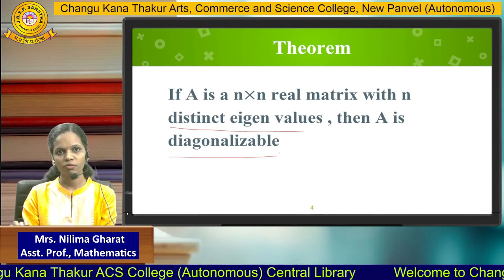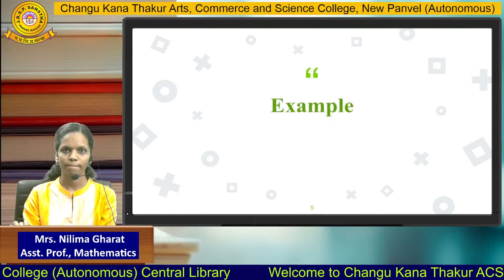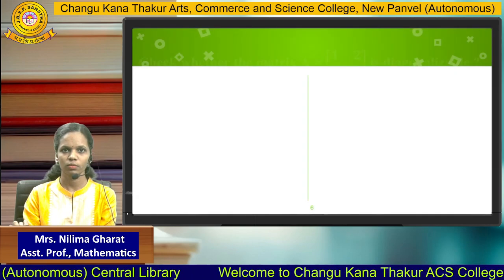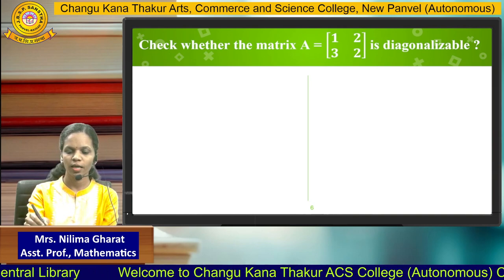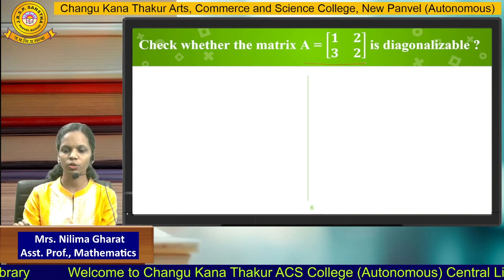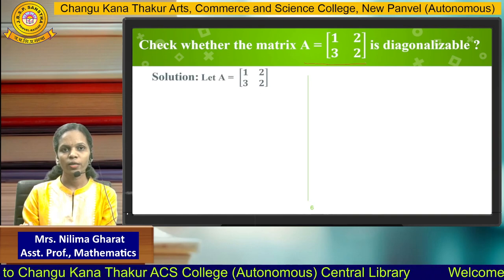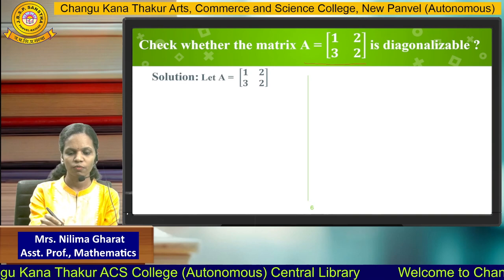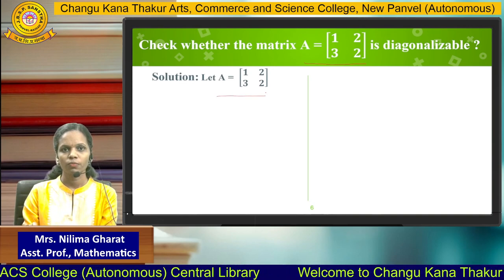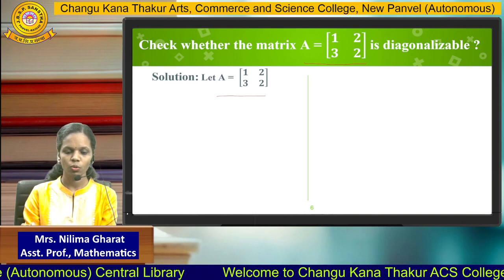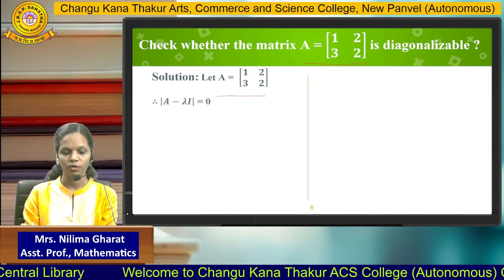By using this theorem we will solve one example. Check whether the matrix A equal to [[1,2],[3,2]] is Diagonalizable. The 2 by 2 matrix given to us is A equal to [[1,2],[3,2]]. We need to find out the eigenvalues, so by using the characteristic equation we find out the eigenvalues.